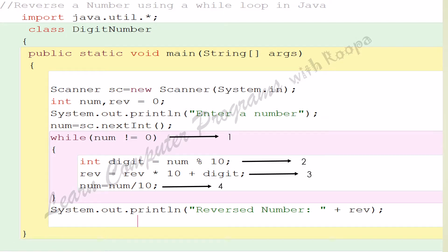This is the program for how to reverse a number. We have a class DigitNumber, and here I have two variables: num to accept the number from the user when I say 'Enter a number', num equals sc.nextInt(), and rev to store the reverse number.